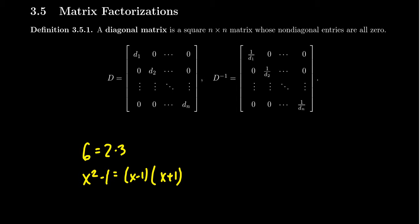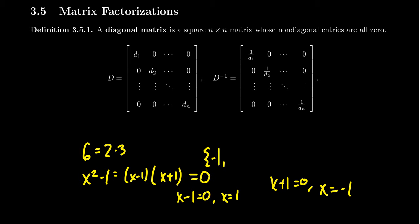Factorization can be extremely useful in solving problems that arise with such objects — for example, the equation x²−1=0. By the zero product property, we can infer that either x−1=0, which implies x=1, or x+1=0, which implies x=−1. We can gain information from this factorization and find the solution set to this equation: {−1, 1}.